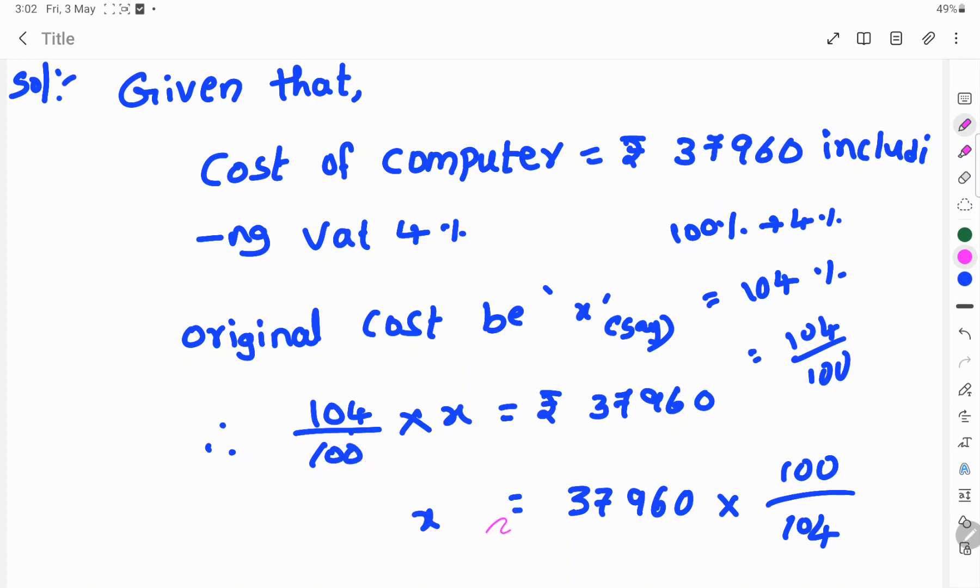here 104 by 100 is multiplied with x. So, this fraction changes to left hand side, then reciprocal of the fraction. So, 37,960 into 100 by 104.